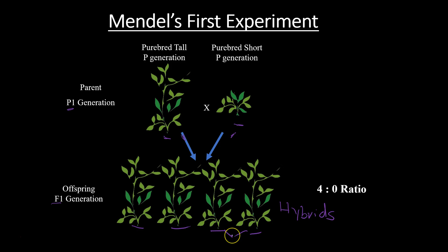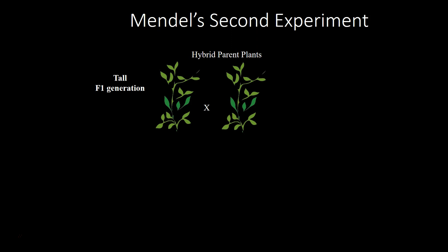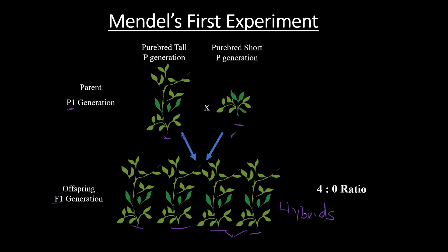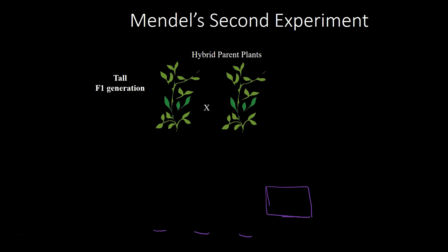Mendel started thinking: what's going to happen if I take two of these hybrids and cross them — what are their offspring going to look like? So he took two hybrids for being tall and crossed them. Every single time he did this, he got a ratio of three to one: three tall plants and one short plant. Going back to the F1 generation, that short trait was completely hidden — there was no evidence of it — however, in this F2 experiment the short trait came up again.